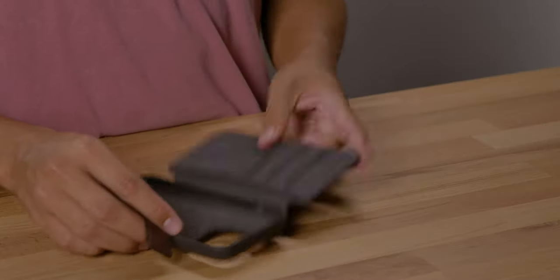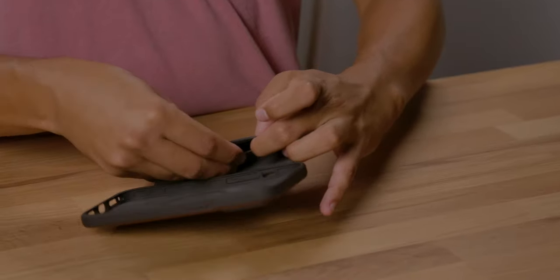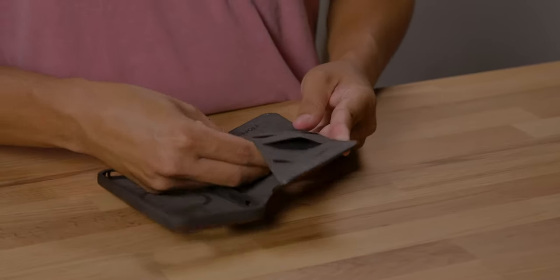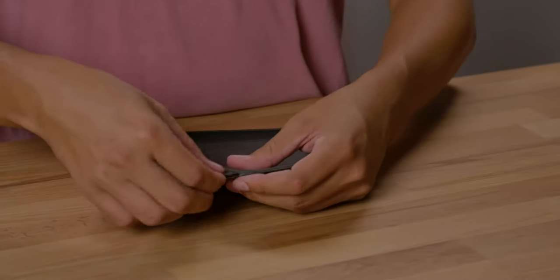So to attach the magnetic clasp, we're going to go on the inside of this cash slot, and there's a slit on the other side that we're going to push the magnetic clasp through.